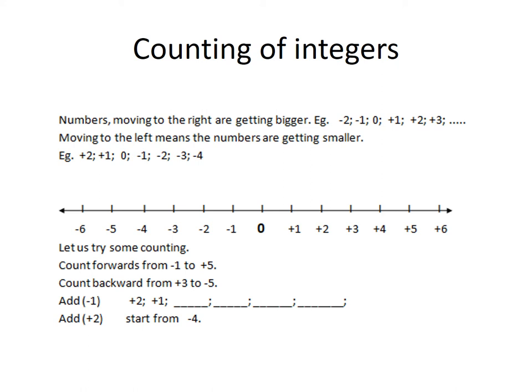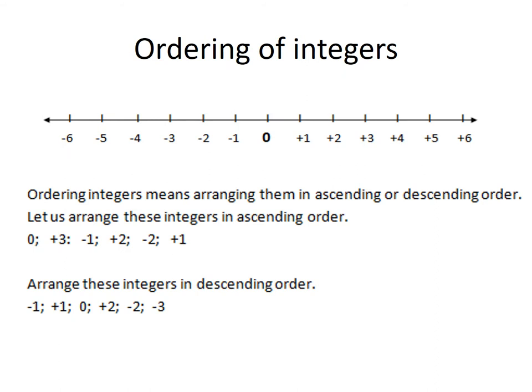Now we go on to our next section, which is ordering integers. You will notice that I have a number line in front of you. The number line goes from negative 6 on the left to positive 6 on the right. Ordering integers means arranging them in ascending or descending order. Let us arrange these integers in ascending order.